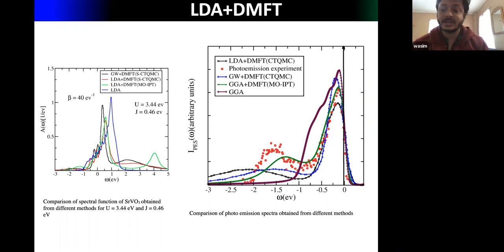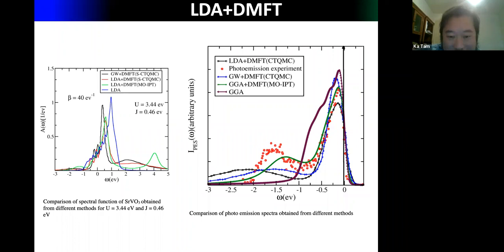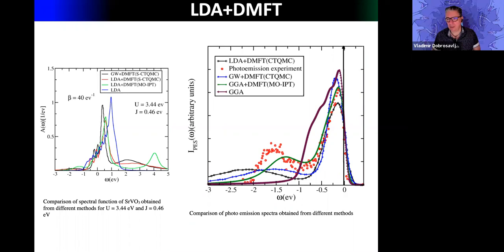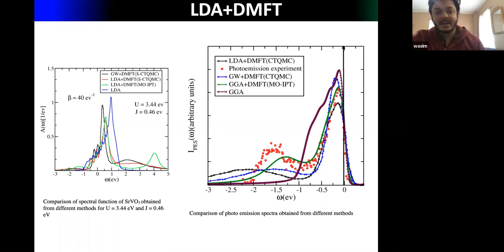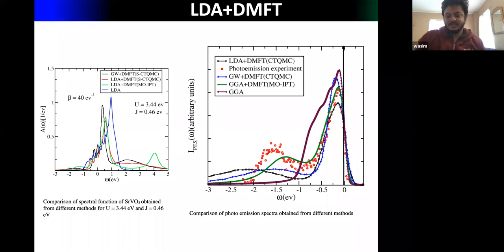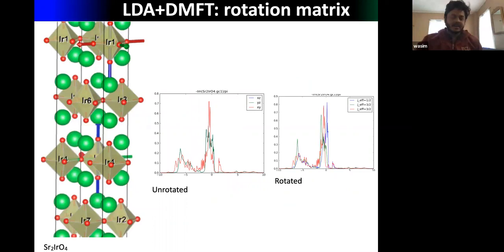The result for a ruthenate-like material miraculously comes closer to the photoemission experiment. When asked directly whether IPT gives completely unreasonable results, the answer is yes: going beyond three orbitals or when f-orbital elements appear in the Hamiltonian gives unreasonable results — causality breakdown makes it very hard to converge. Attempts at magnetically ordered states with IPT have not been made.